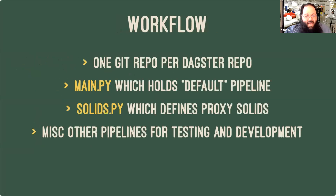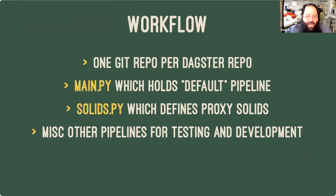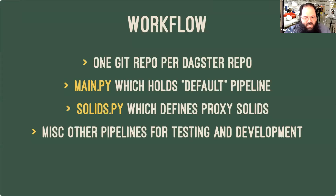Our workflow is pretty light after that. Each overall project has its own Git repository for the pipelines. One of those will be the default pipeline in main.py — that defines which pipeline to use when a customer request comes in without an override, since the pipelines are also versioned. We have solids.py for defining all of those proxy solids. When we want to write a new test pipeline, we'll write that in some other file. When we're happy that it's working well, we can rename it into place to be the new default.